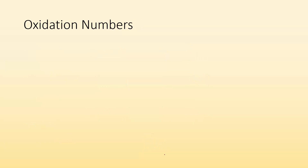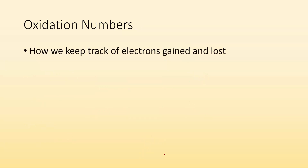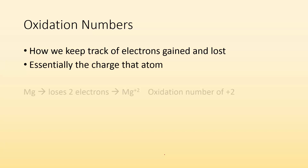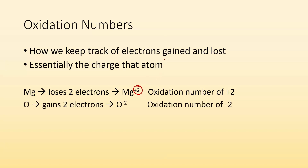Oxidation numbers — how are we figuring out what these are if they're not given to us? All oxidation numbers are is how we keep track of electrons gained and lost. Essentially, it's the charge of that atom. If Mg loses two electrons, it becomes Mg²⁺ — it has an oxidation number of plus two. If oxygen gains two electrons, it becomes oxygen with a minus two charge, and the oxidation number for that oxygen ion is minus two.